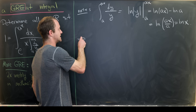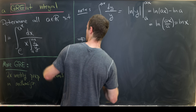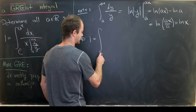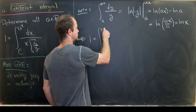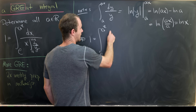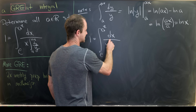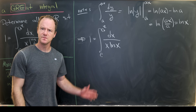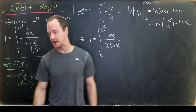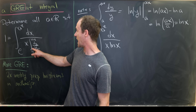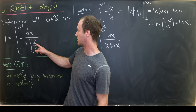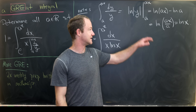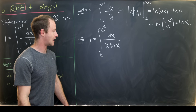Now we can rewrite the given equation in a simpler form: 1 equals the integral from e to a to the e of dx over x times the natural log of x. The interesting thing is that the a's were built into this integral in the denominator, but they don't actually influence anything because they cancel out.